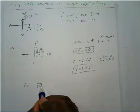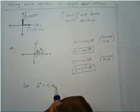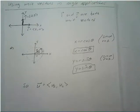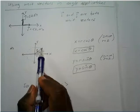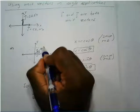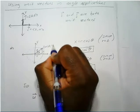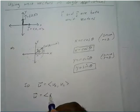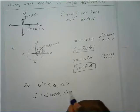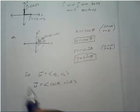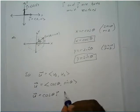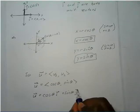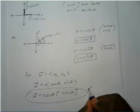We know that U, the unit vector, has two components at its terminal point. Normally this would be (X, Y), but instead it's going to be (cosine θ, sine θ). We can also write that as a linear combination: cosine θ times the I vector plus sine θ times the J vector, which is just another way to write our unit circle.